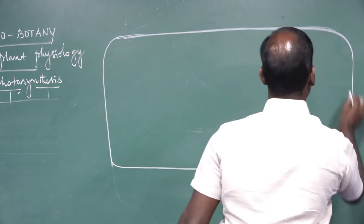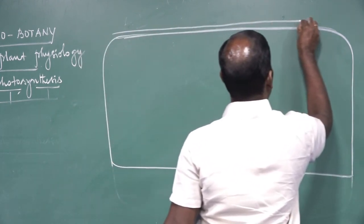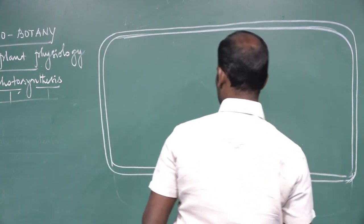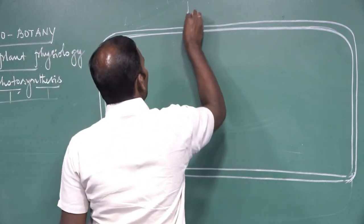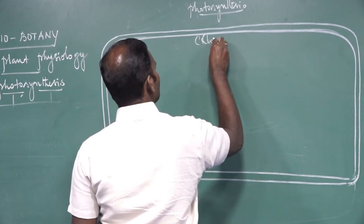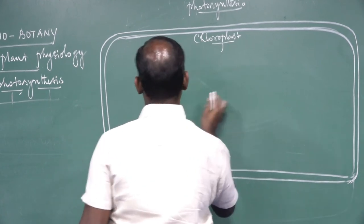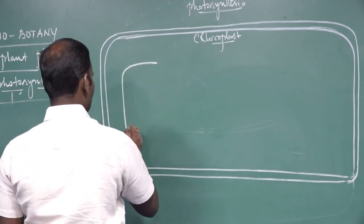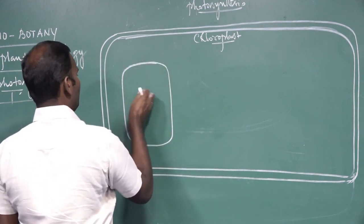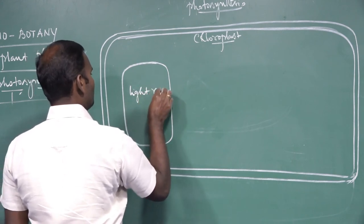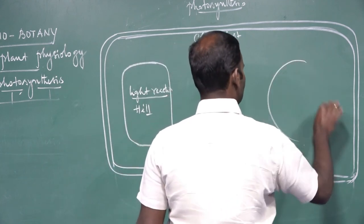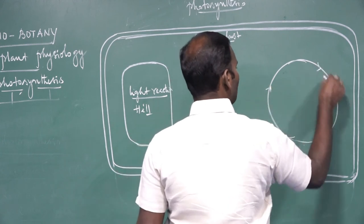In the schematic diagram of the chloroplast structure: it has two membranes — outer and inner — with intermembrane space between them. The stroma is the matrix inside. The thylakoids are where the light reaction takes place, also called the Hill reaction. The dark reaction, also called the Calvin cycle, takes place in the stroma.